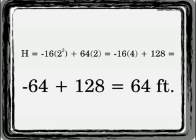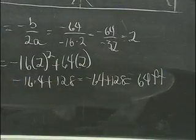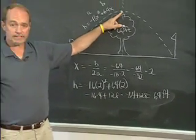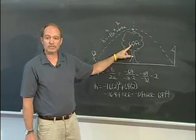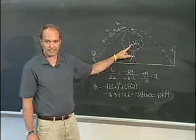And when we add those two values together, we get 64 feet. So what this means is that the ball went 64 feet high, which was just enough to clear the 60-foot tree.